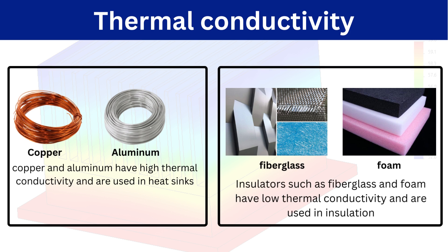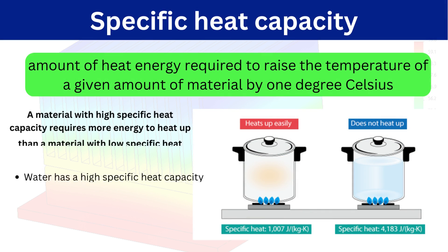For example, copper and aluminium have higher thermal conductivity and are used in heat sinks, while insulators like fiberglass and foam have lower thermal conductivity and are used in insulation.